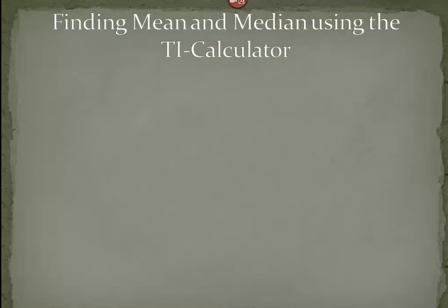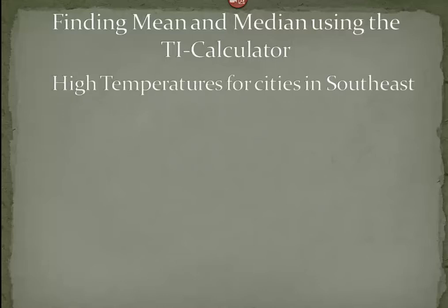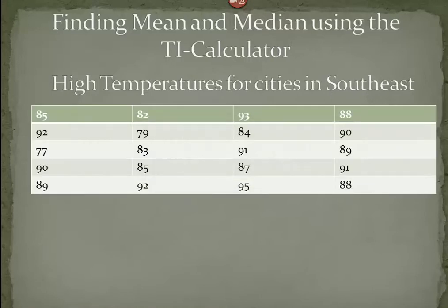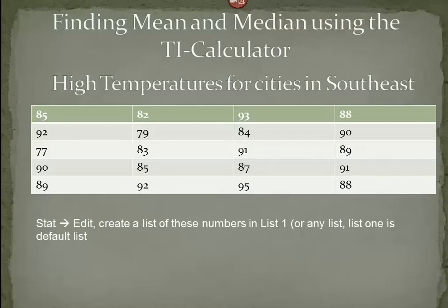Using the TI calculator makes finding these measures of central tendency fairly easy. Let's take these high temperatures for cities in the southeast. Our first step would be to put these into a list in our calculator. We go to the STAT button, and when we hit STAT the first option is Edit. Hit Enter, and then we create a list of numbers in List 1. You can use any list — you don't have to put them into List 1, however List 1 is the default list.